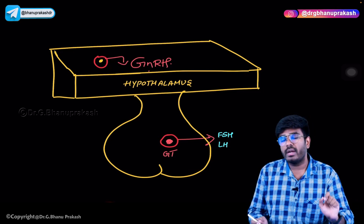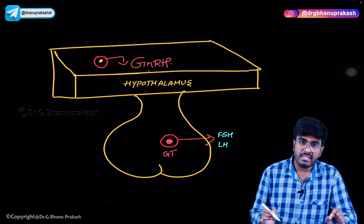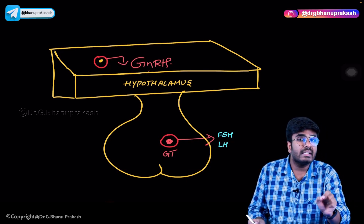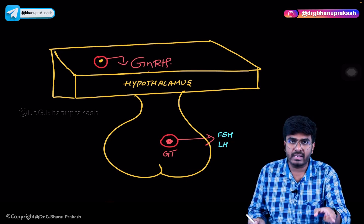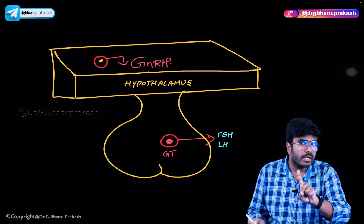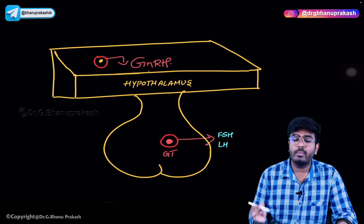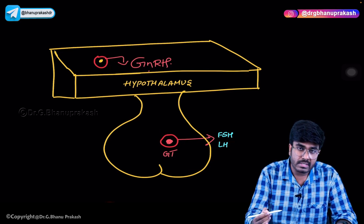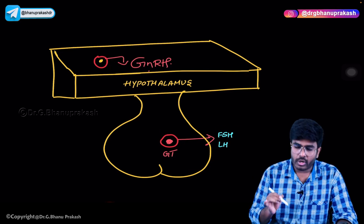An important point to note here is that GnRH coming from the hypothalamus is not released continuously. It is released in pulsatile doses, in regular intervals — not continuously. So GnRH comes down to the anterior pituitary in pulsatile doses, and only then will you have production of FSH as well as LH.